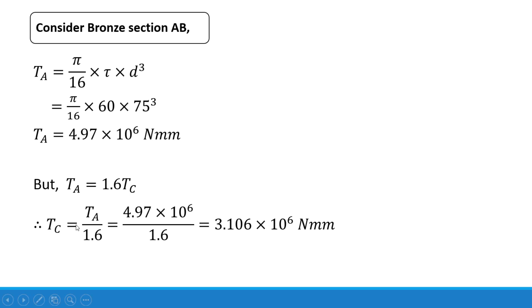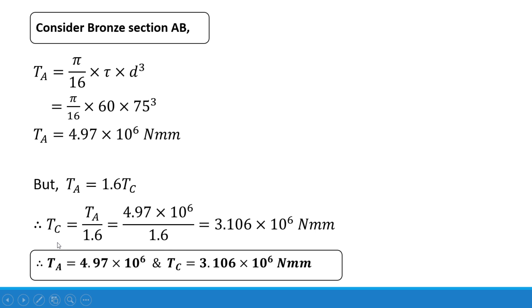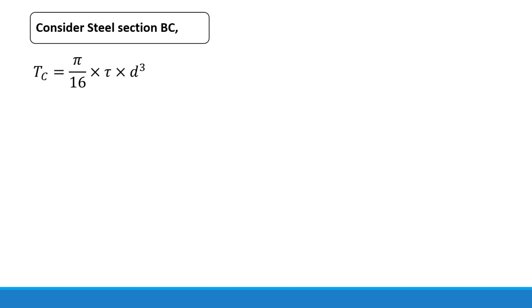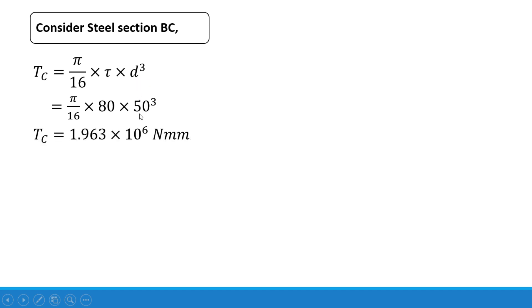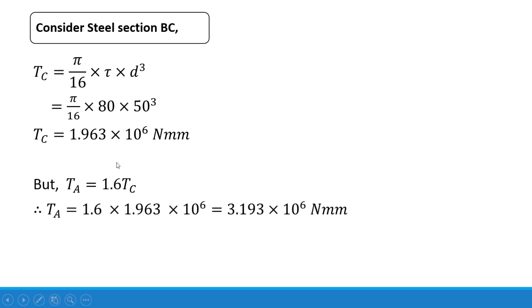Now considering the steel section BC as a solid shaft, torque = (π/16) × τ × d³, where τ = 80 MPa and d = 50 mm. This gives Tc = 1.963 × 10⁶ N·mm. Using the relation Ta = 1.6 × Tc, the corresponding Ta = 1.6 × 1.963 × 10⁶ = 3.139 × 10⁶ N·mm.